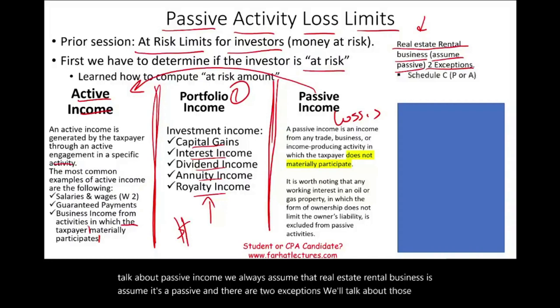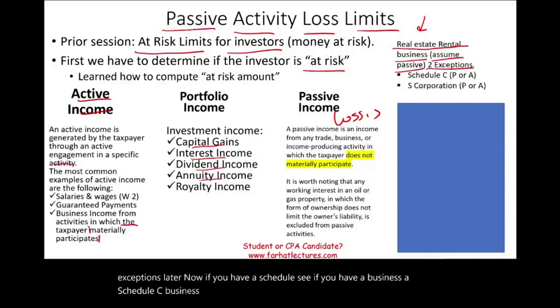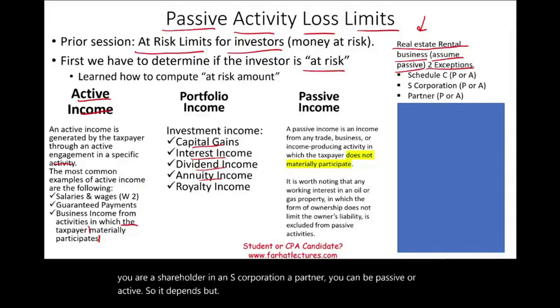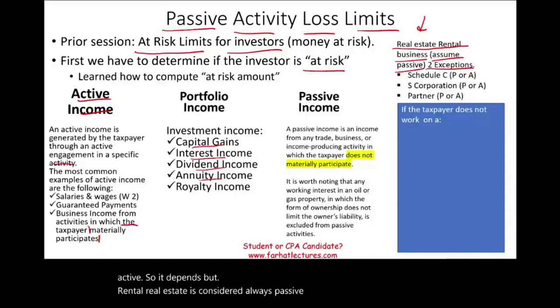If you have a Schedule C business, you could be passive or active. If you are a shareholder in an S corporation or a partner, you can be passive or active — it depends. But rental real estate is always considered passive. Passive means the taxpayer does not work on a regular, continuous, and substantial basis in the business.